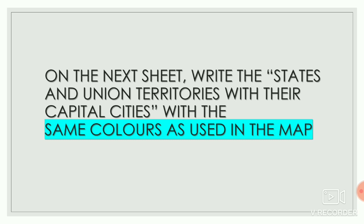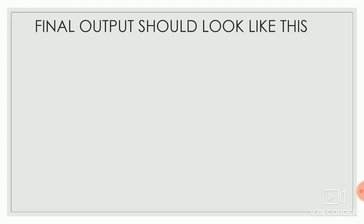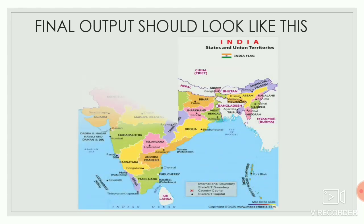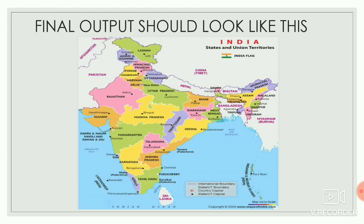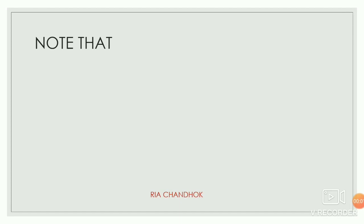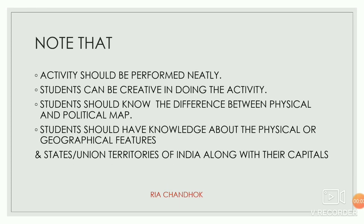On a separate sheet, write the states and Union territories with their capital cities using the same colors as used in the map. After performing this activity, your final output will look like this. You can also name neighboring countries like Afghanistan, China, Pakistan, Sri Lanka, etc. in your political map of India.